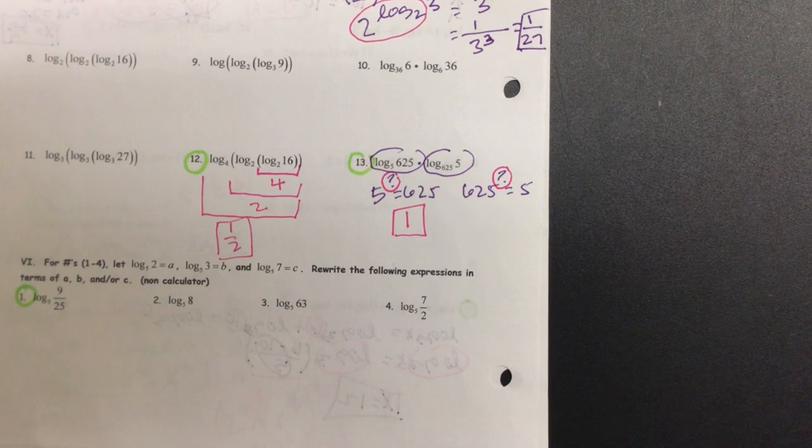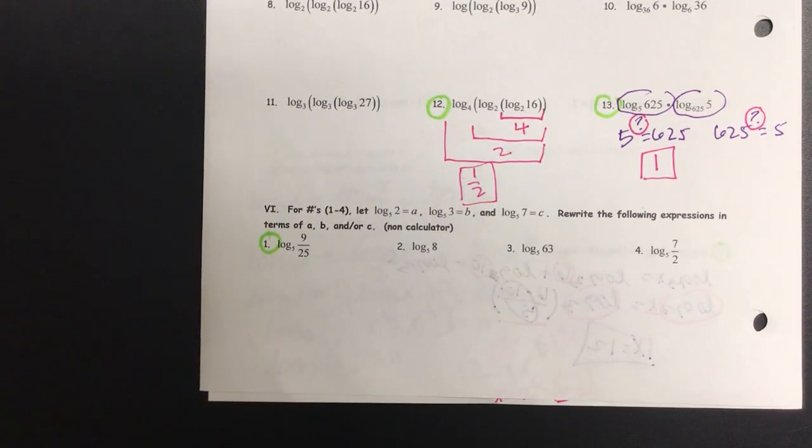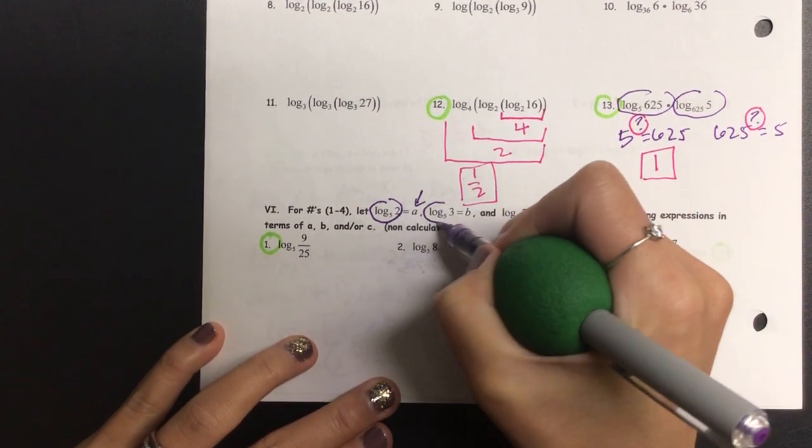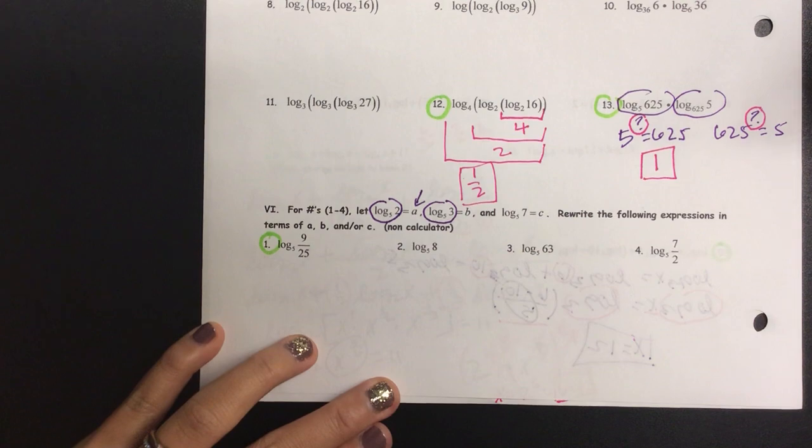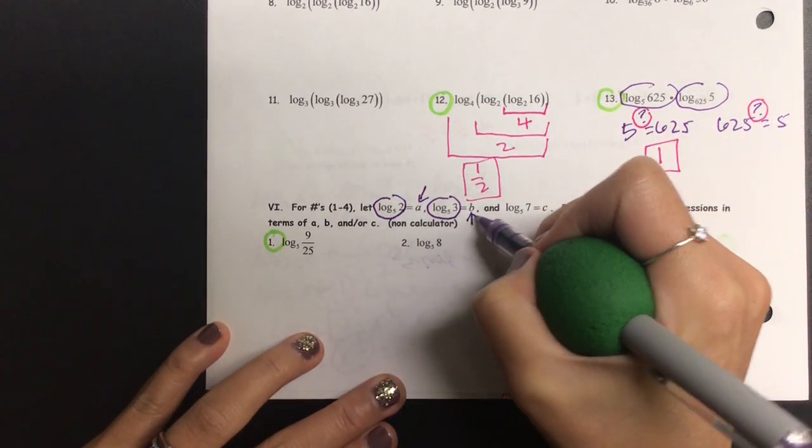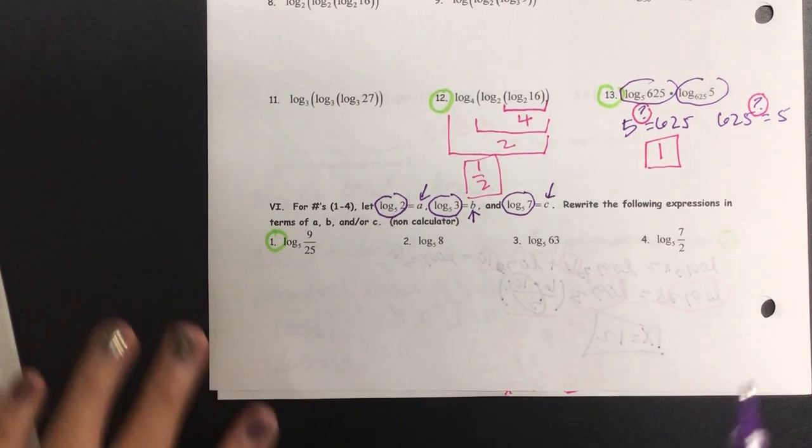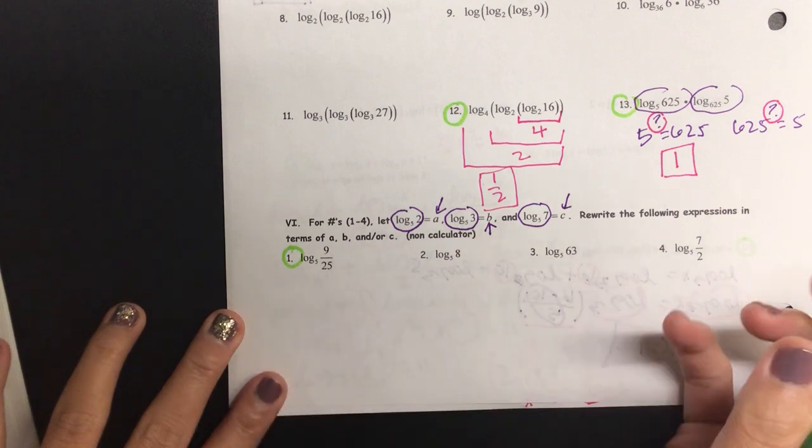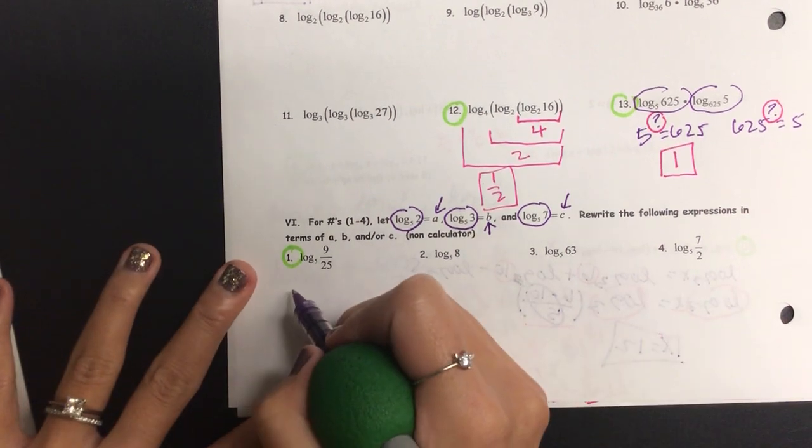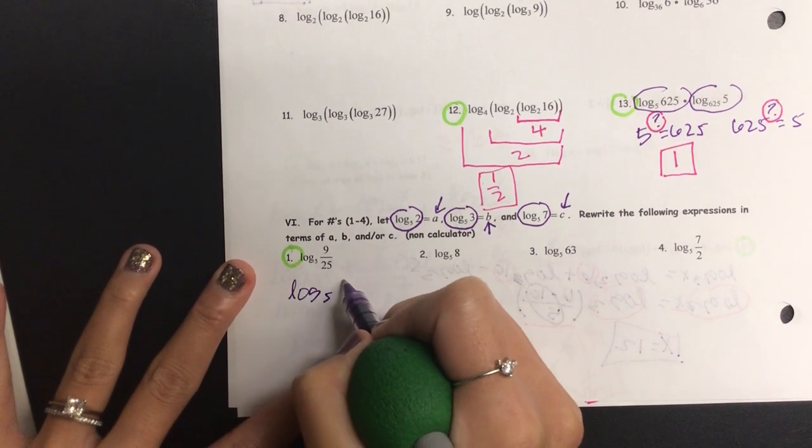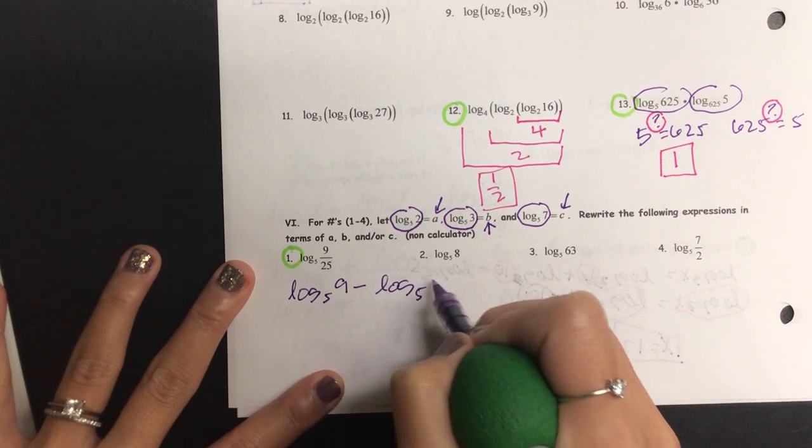Was that the last one? Oh, we had number 1. Okay, let's do number 1 on the last category. So, on the last category, they kind of gave us what to put in. If you see log base 5 of 2, you're putting in A. And if you see log base 5 of 3, we're going to put in B. And then log base 5 of 7, we're going to put in C. So, looking at this, it's already condensed. So, what operation am I going to use to expand it? Subtraction. We're going to subtract it.